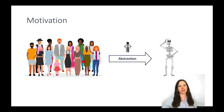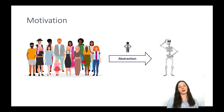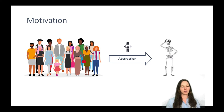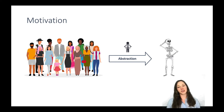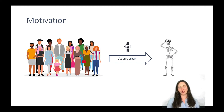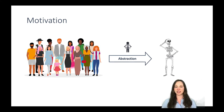To motivate the concept of skeleton abstraction, let us consider a group of people. As you can see in the picture, they are really diverse. If we imagine being a doctor needing to do an anamnesis for all of these people, it would be very inefficient to analyze all of them separately with different methods. Fortunately, there is an abstraction method — the X-ray — which generates the skeleton of these people.